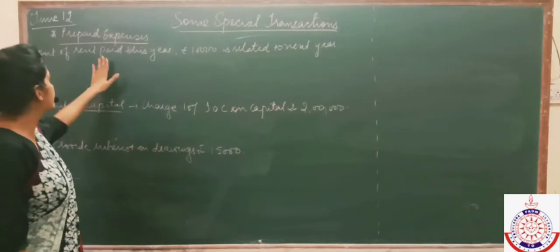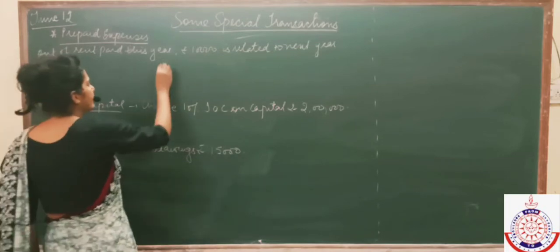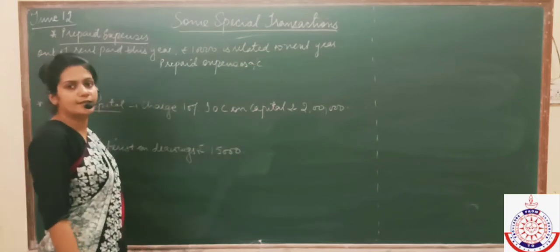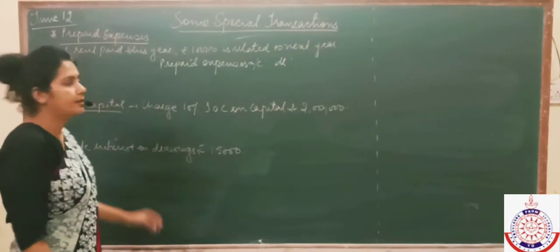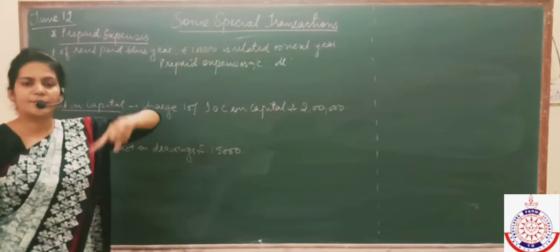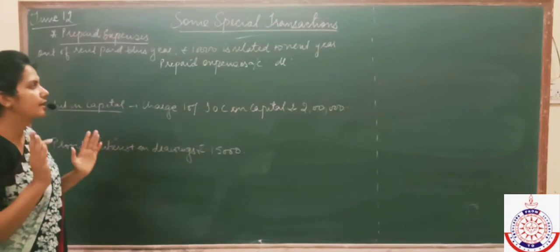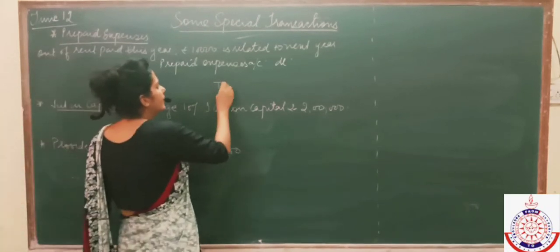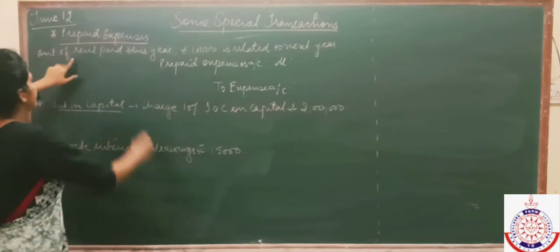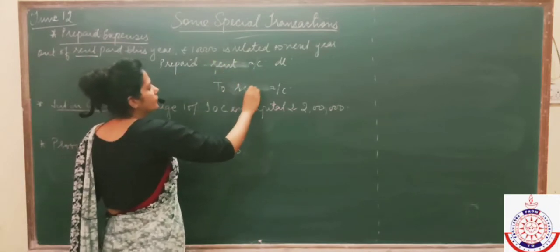We have already discussed that prepaid expenses are our assets. All assets have debit balances, so we should debit the prepaid expenses account. These expenses are related to next year. For example, out of rent paid this year, 10,000 is related to next year — so 10,000 is prepaid. We need to pass the entry: prepaid expenses account debited to expense account. Here the expense is rent, so the entry becomes: prepaid rent account debited to rent account.